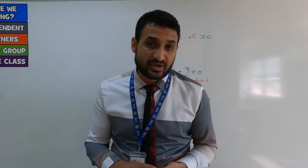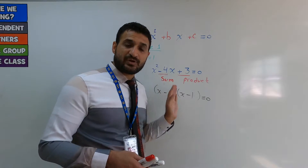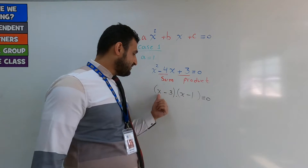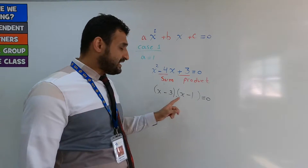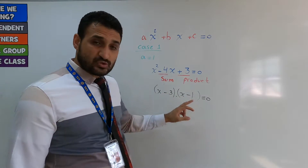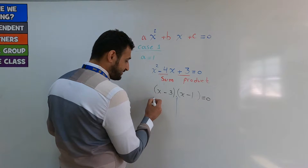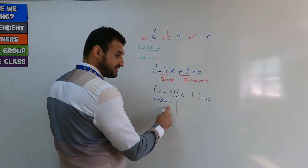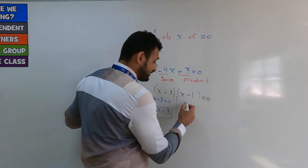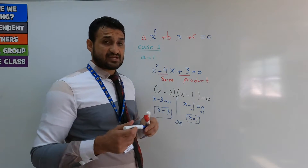We call this factoring or factorizing — use it when a equals 1, using sum and product. So now you have (x − 3)(x − 1) = 0. One of the brackets must be zero. Either x − 3 = 0, giving x = 3, or x − 1 = 0, giving x = 1.